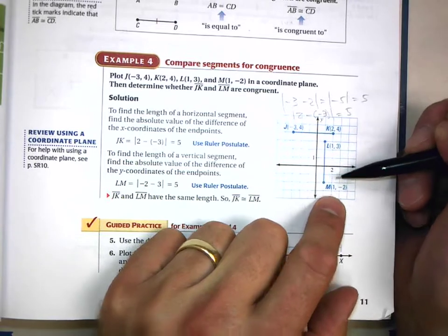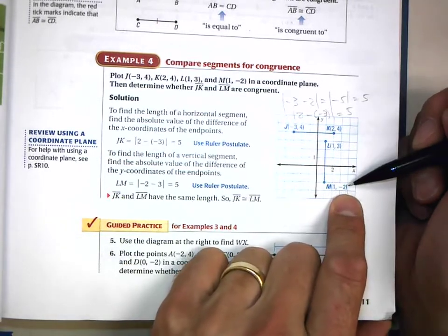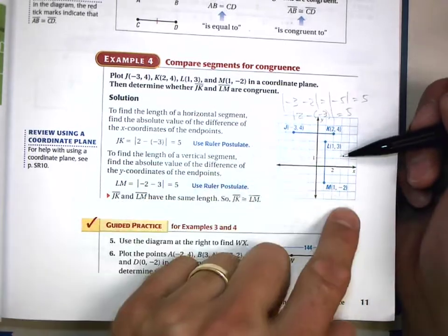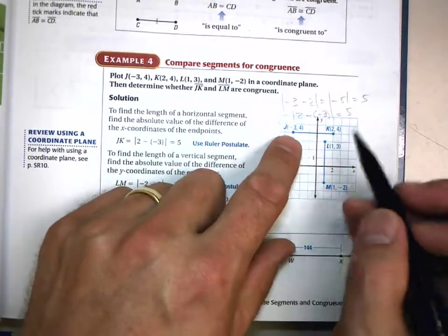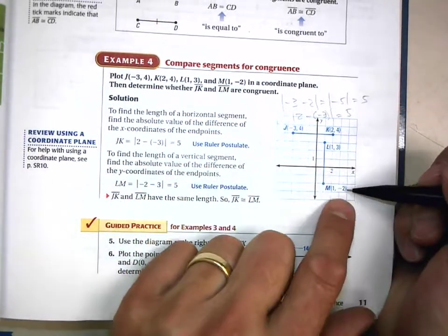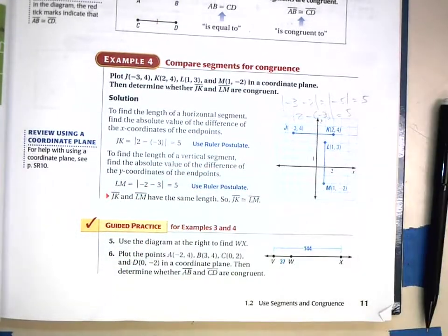You could do the same thing for this one down here. Notice that the x-coordinates now are the same and the y-coordinates are different, so we would take the difference in y. This one is positive 3 and negative 2.